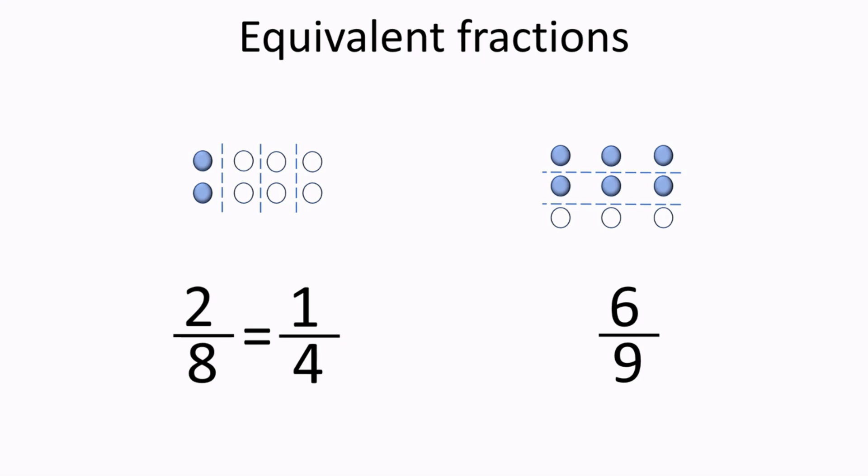and the first and second row has all the circles shaded, so we can also write this fraction as 2 shaded rows out of 3 total rows, or 2/3.